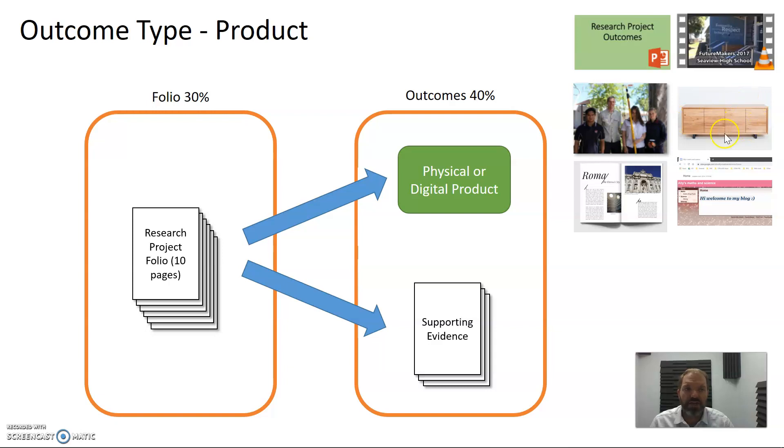It might be a community project with the supporting evidence being a journal that goes along and backs up some of that. A physical product like a piece of furniture, a magazine article, a blog article, or a website. So any of these sorts of physical or digital products can also be the outcomes from your research project. But they require written supporting evidence, annotations, or something that goes along with them.